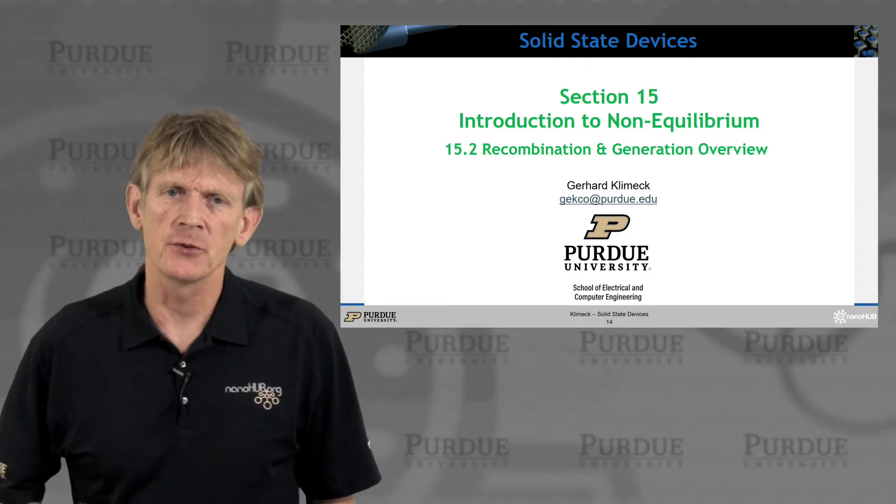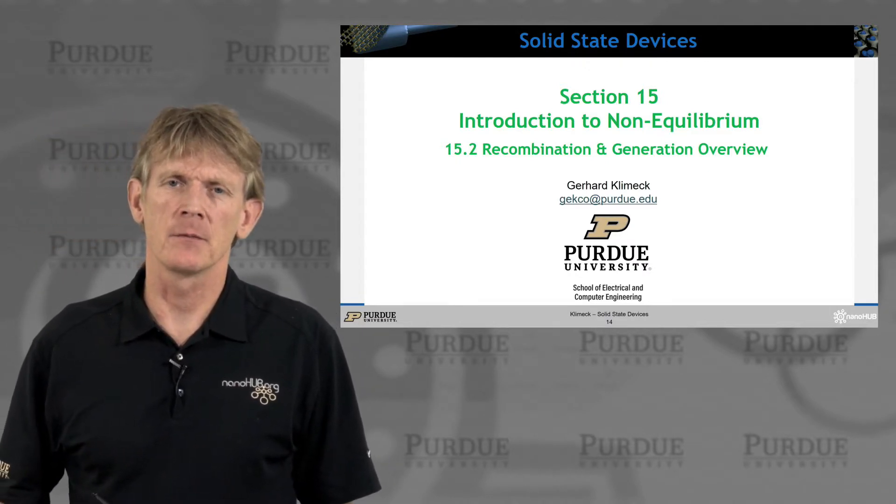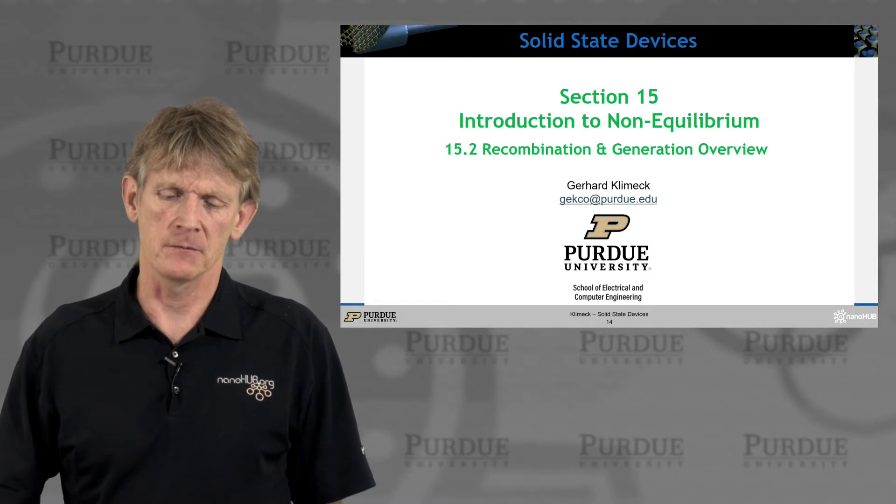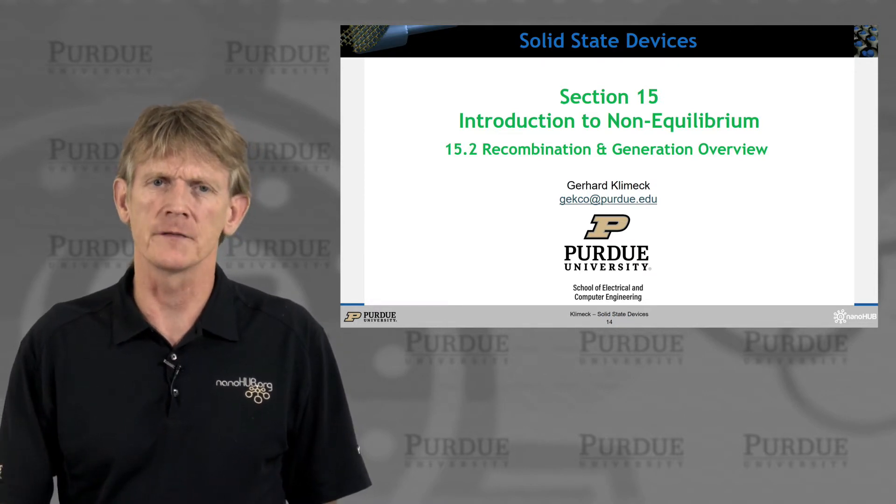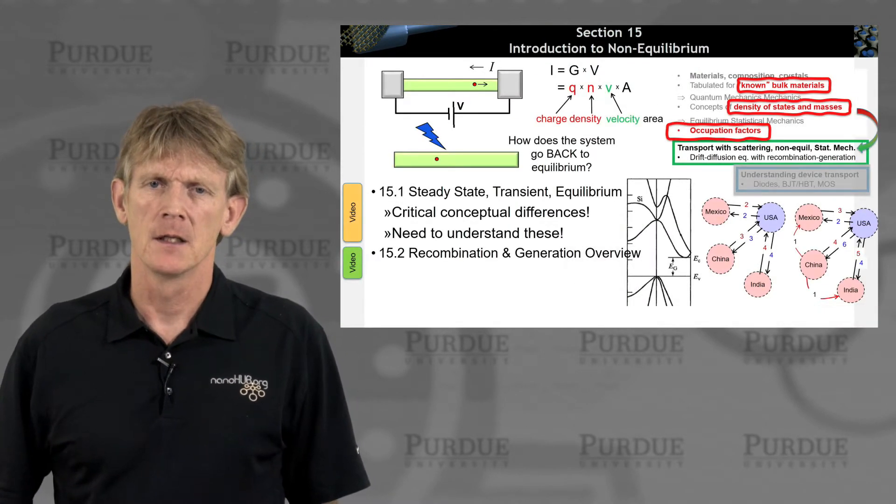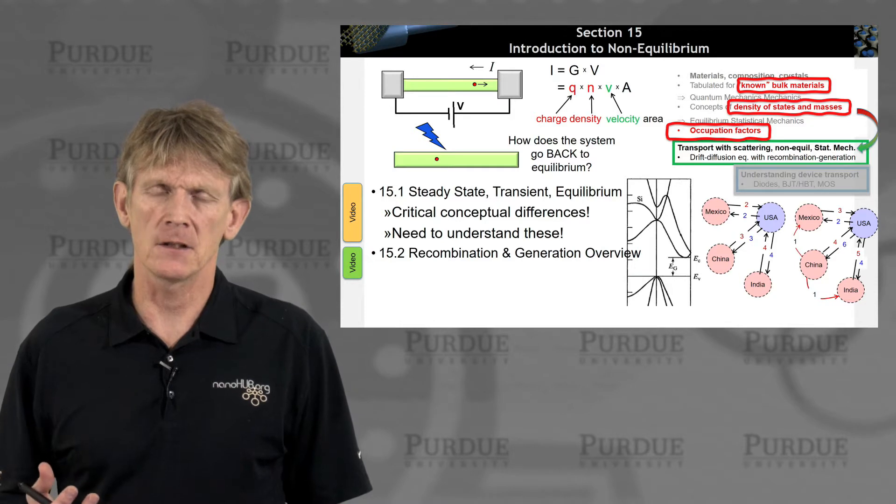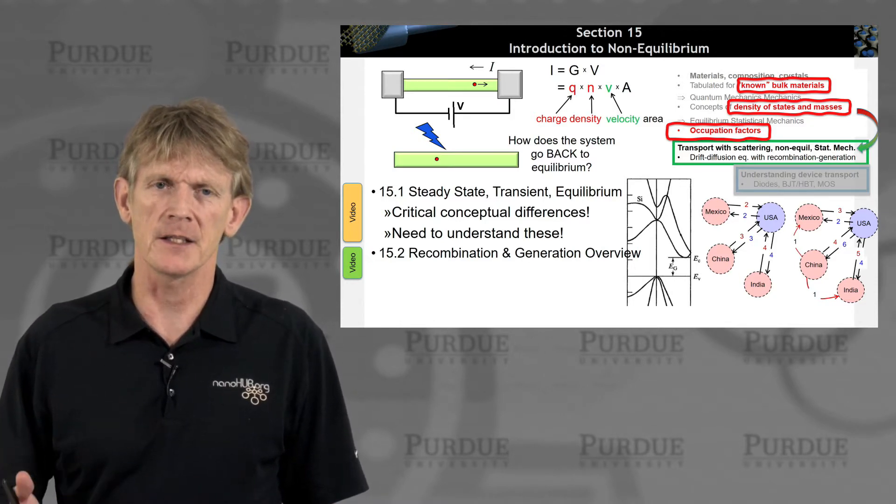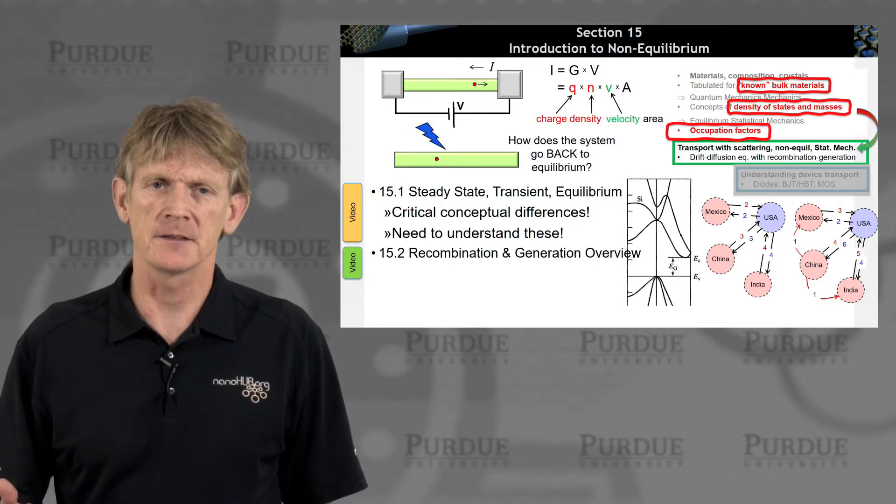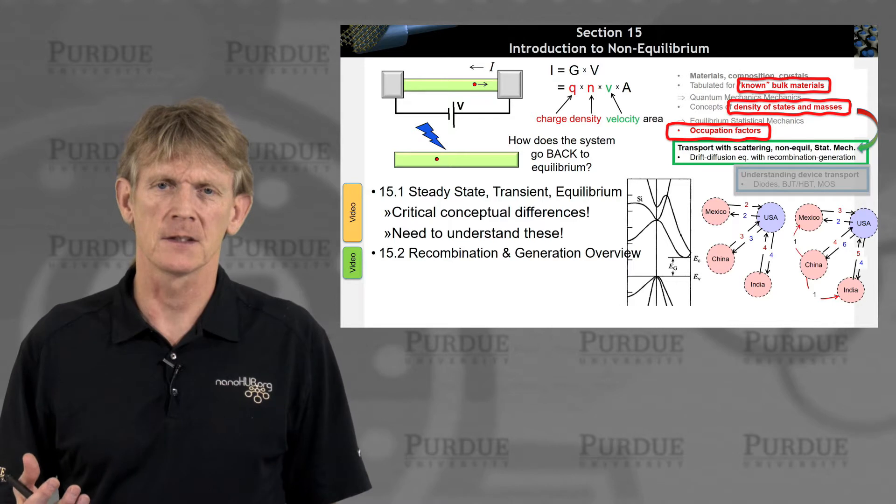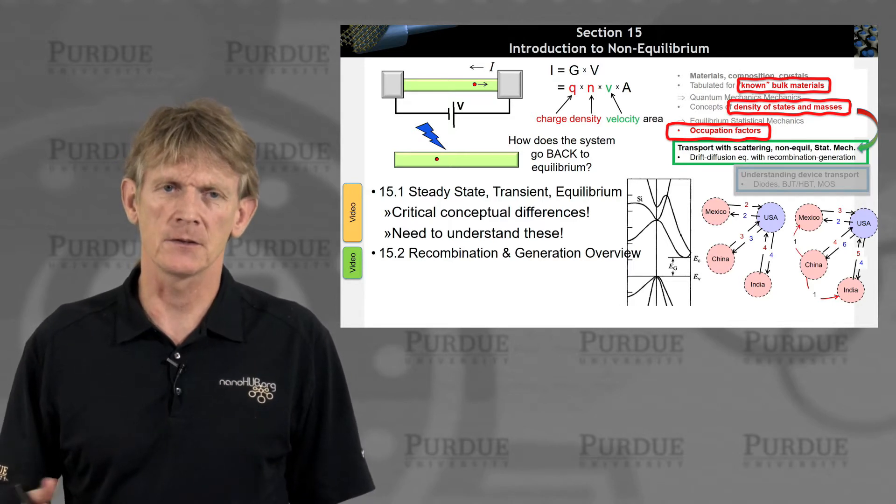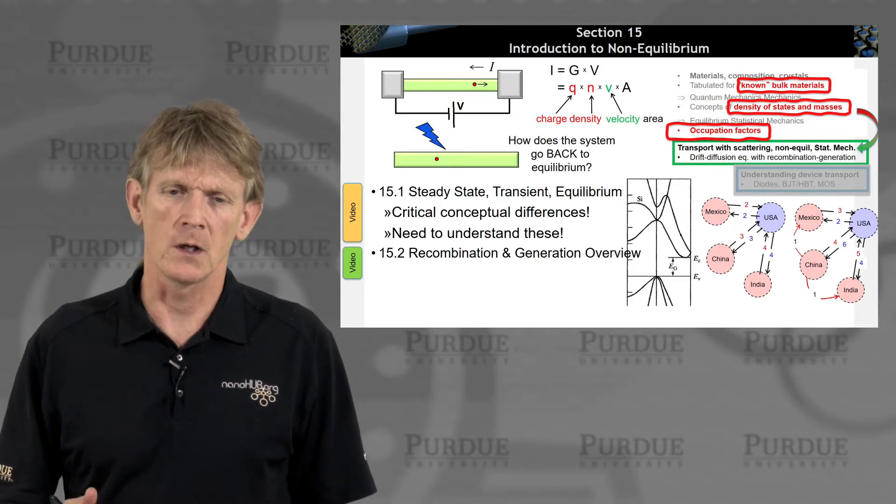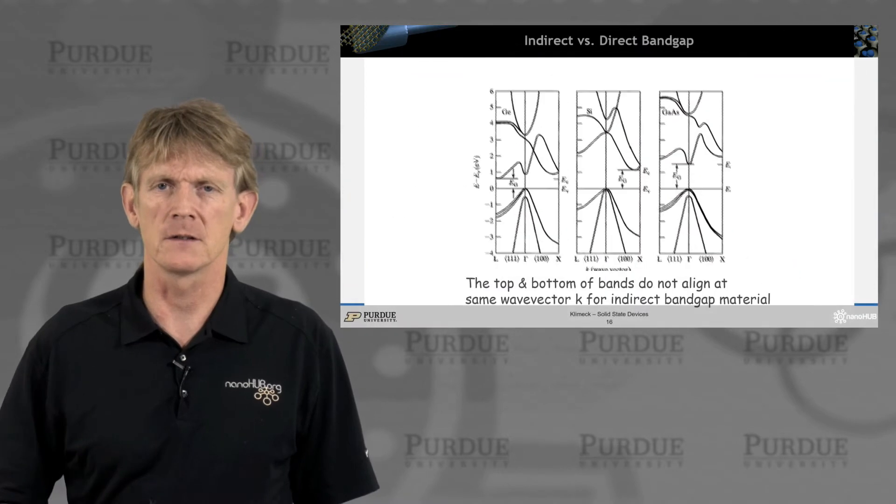In this introduction to non-equilibrium, let's talk about some recombination and generation processes in an overview type fashion. That's in the context of having talked about detailed balance versus steady state versus transient features. Now let's look at some individual processes that can occur in semiconductors that are really relevant to our understanding in these semiconductor devices.